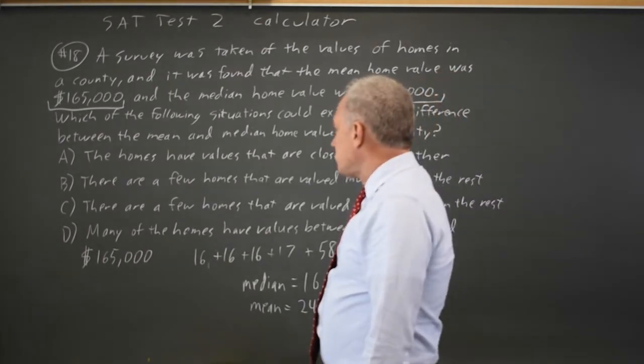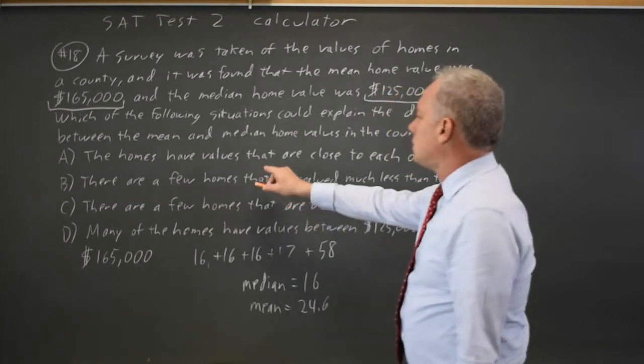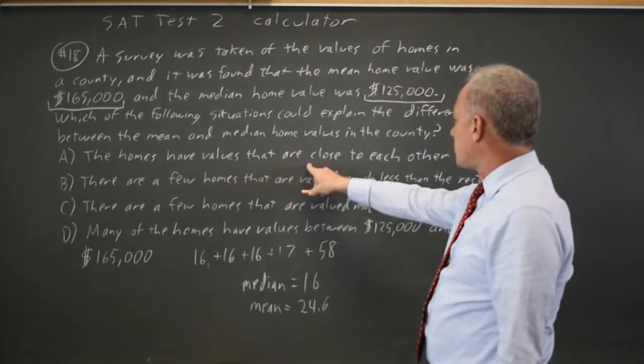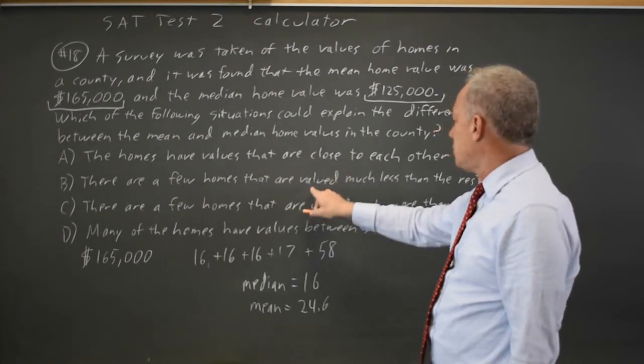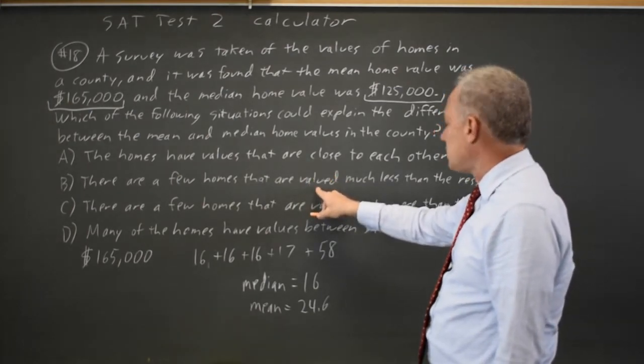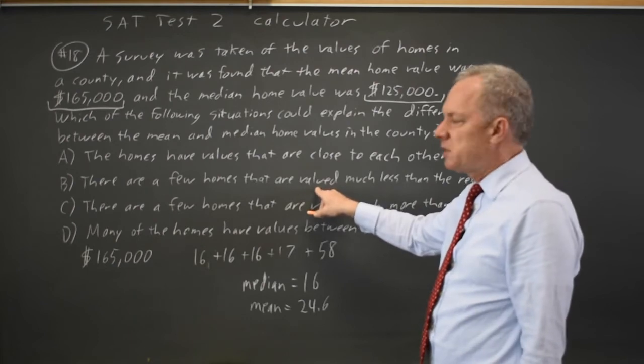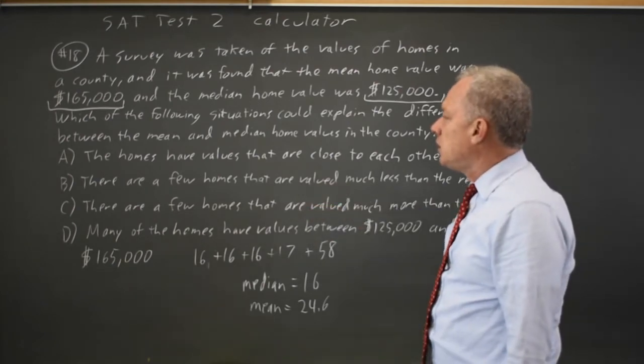Now looking at the answer choices, choice A: homes have values that are close to each other, that would tend to give you mean and median that are close to each other. A few homes are valued much less than the rest would pull the mean down.